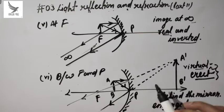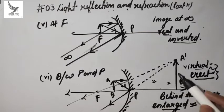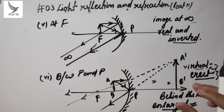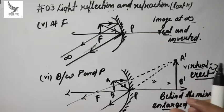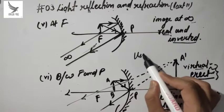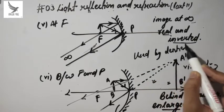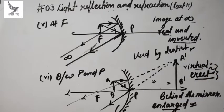This condition is used by dentists — whenever there are dental problems, they use this situation to enlarge the image of the tooth with the help of a mirror. So this mirror is also used by dentists. It is also called a shaving mirror because it is also used for shaving.